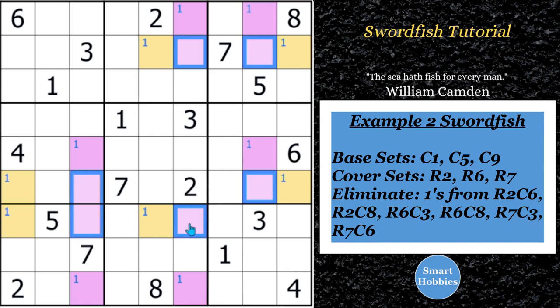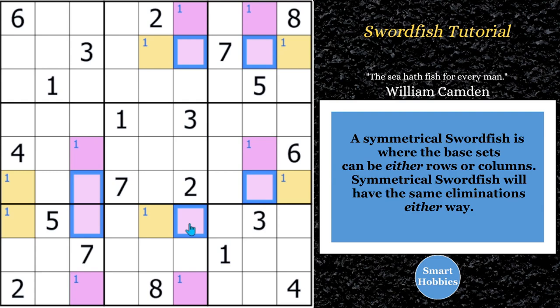Now, something else I wanted to point out, many times a swordfish will be symmetrical. And what I mean by that is instead of using columns and eliminating the rows, you might also find the same, similar swordfish in the rows that will eliminate the same digits in the columns. And this is the case in this one.